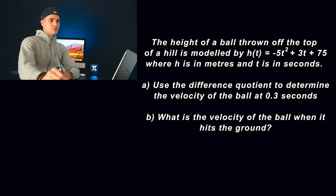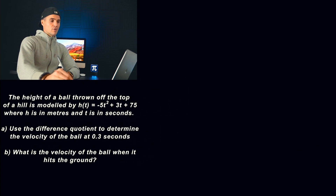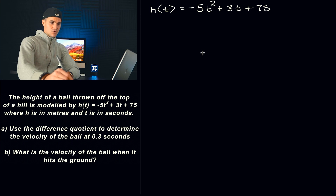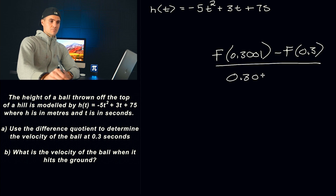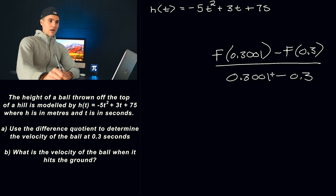You may also be doing it a different way — for example, when finding the instantaneous rate of change at 0.3 seconds, you might just plug in a value very close to 0.3, like 0.3001, subtract 0.3 in the numerator, and put the difference in the denominator. So you might just be doing calculations that way.